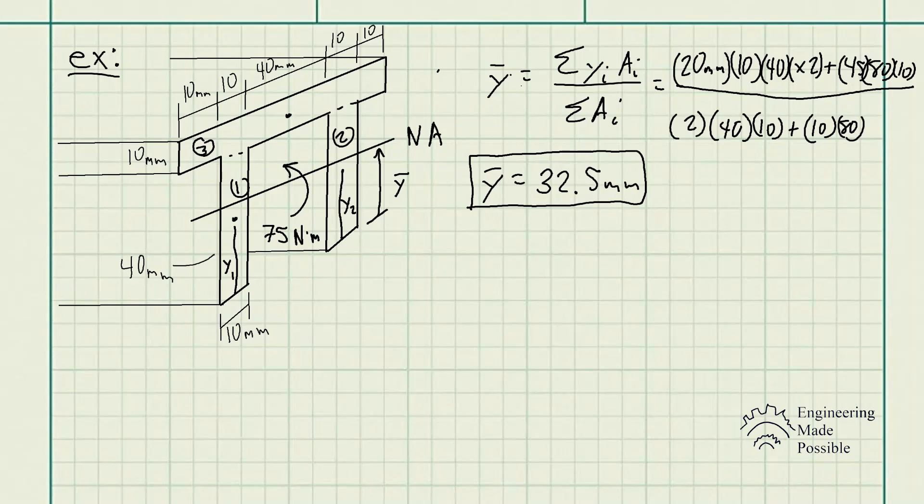When you try to solve for the neutral axis or Y bar, you sum all the Ys with respect to the bottom portion, because that's where our reference point is. Y1 of this rectangle here is 40 by 10, and half of this would be where the centroid is located for this geometric shape, as well as area 2. For this one, from the bottom, it's going to be 40 plus half of the 10, so it's 45. This is what you use to solve for Y bar divided by the sum of all those smaller areas.